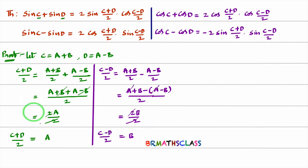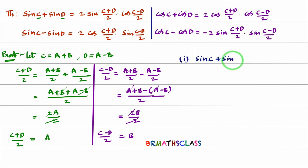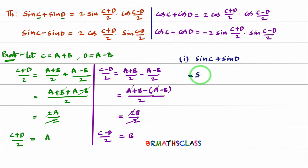This is the information we use to prove all 4 results. Now I will prove the first result. They are asking to prove that sin C + sin D = 2 sin((C+D)/2) · cos((C−D)/2).